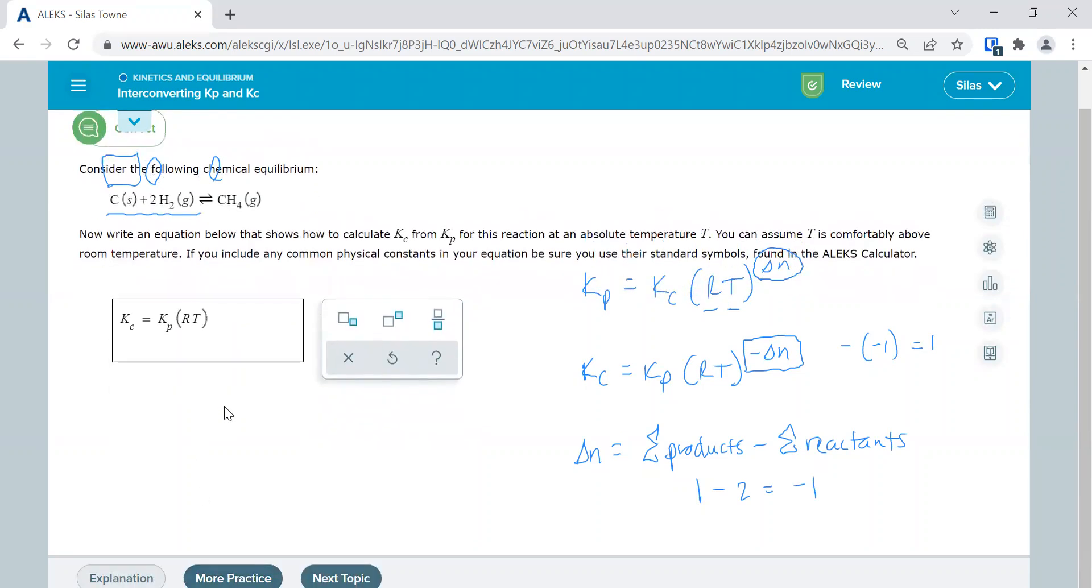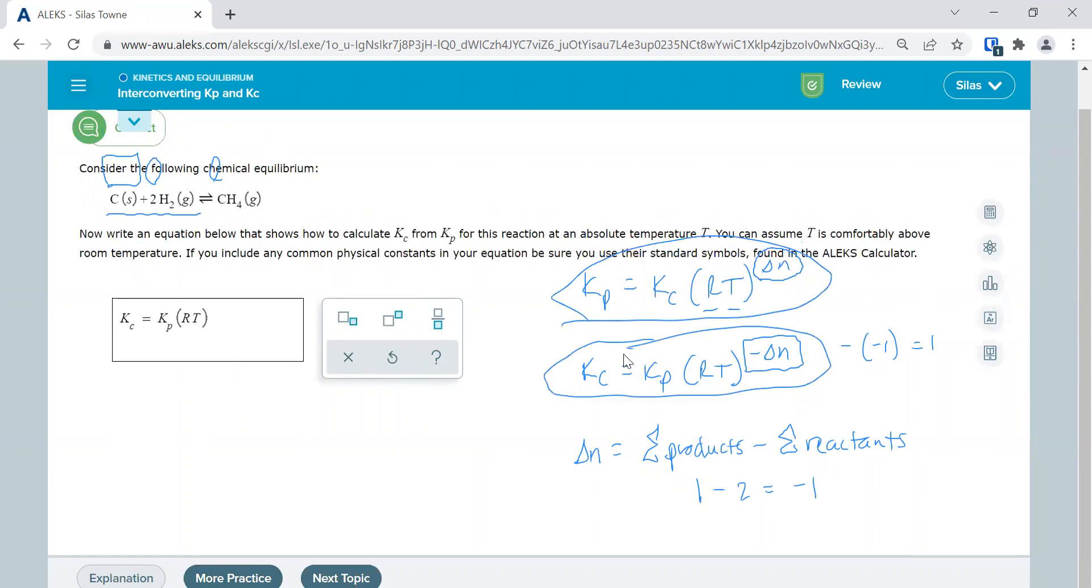So what we're looking for here is that difference of delta N, and then which formula am I going to use? Am I solving for Kp? Am I solving for Kc? And then which ones of these do I include when I solve for delta N?